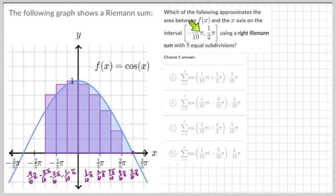Which of the following approximates the area between f, that's this curve here cosine x, and the x-axis on the interval from -3/10π, which is right here.